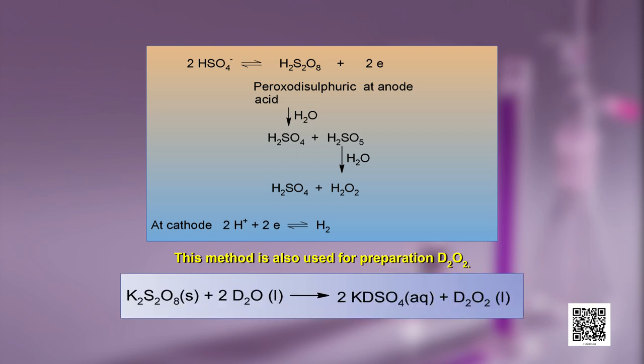This method is also used for the preparation of D₂O₂, the parallel compound to hydrogen peroxide where hydrogen has been replaced by deuterium. The reaction is K₂S₂O₈ plus D₂O giving 2 KDSO₄ in aqueous medium plus D₂O₂ liquid.